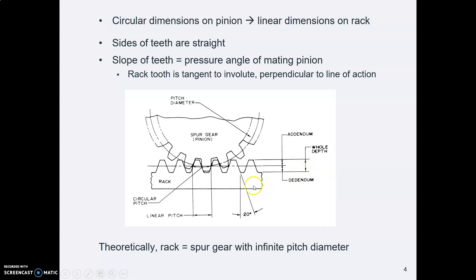The one thing you will notice about a rack is that the sides of its teeth are flat. A spur gear has teeth with involute curves on their sides. A rack has flat tooth faces.